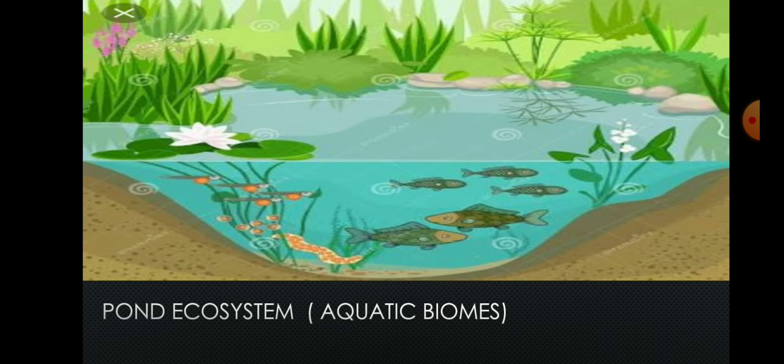First one is aquatic biomes. Aquatic biomes can also be called as an aquatic ecosystem. Aquatic ecosystem includes ecosystems under water such as ocean, sea, lake, pond, etc. Now in this slide you can see a pond ecosystem. That means there is an interaction between biotic and abiotic factors.